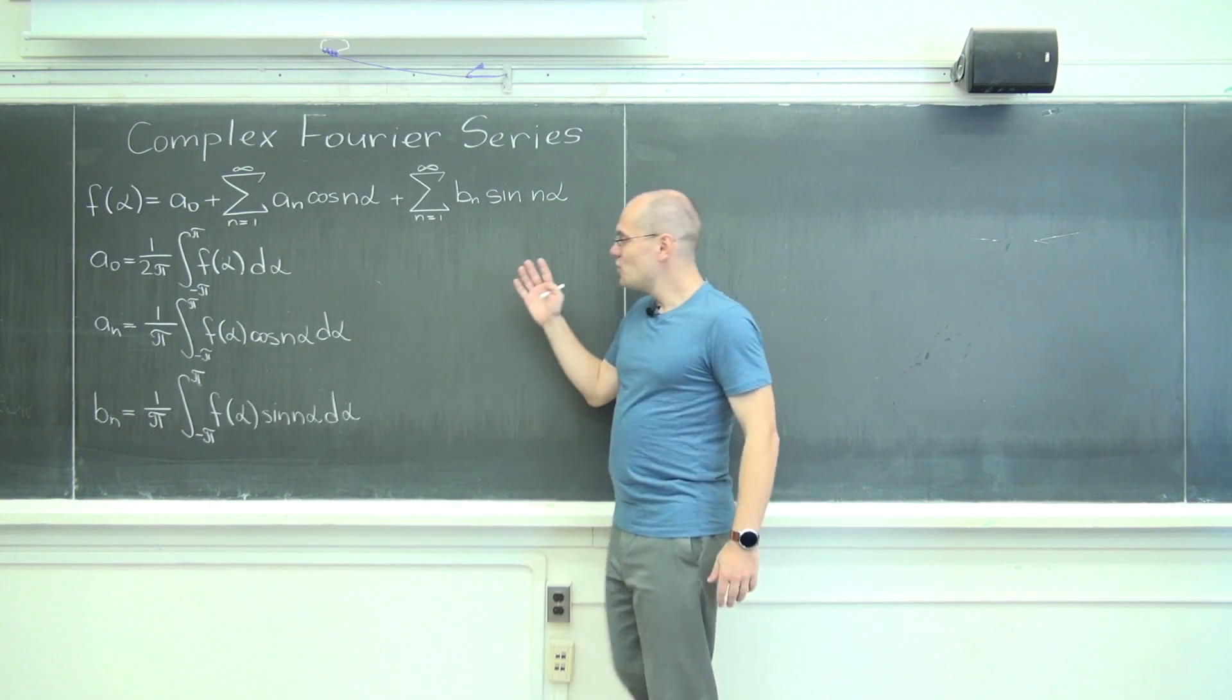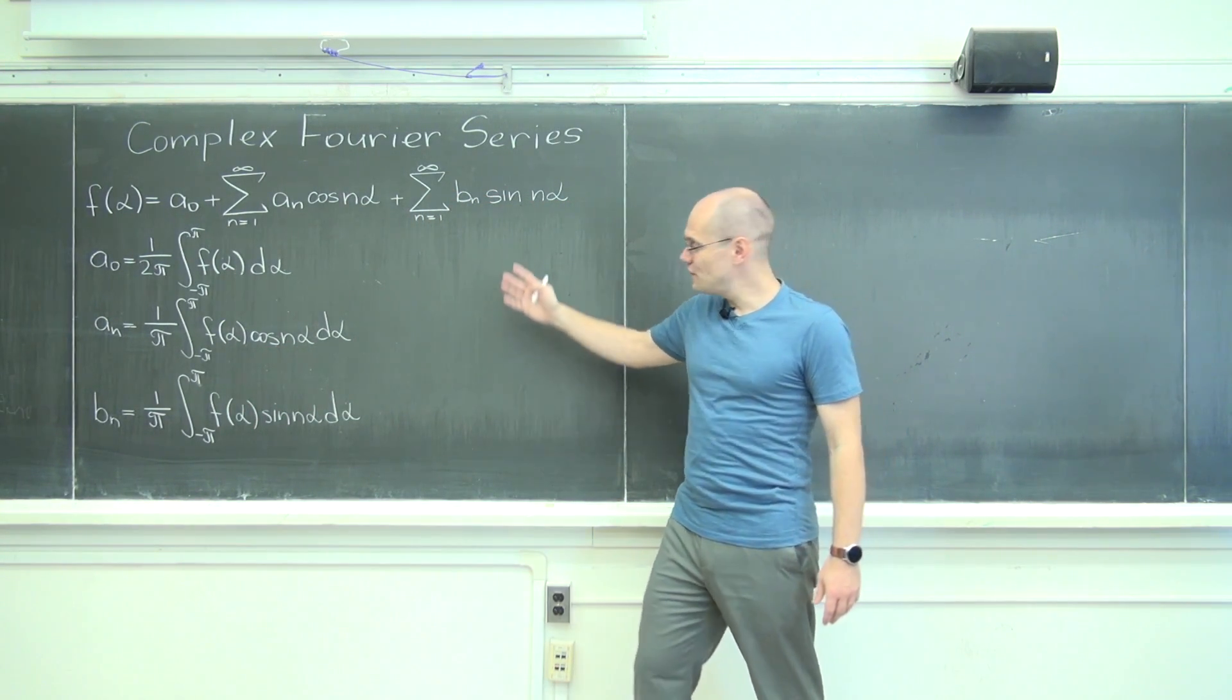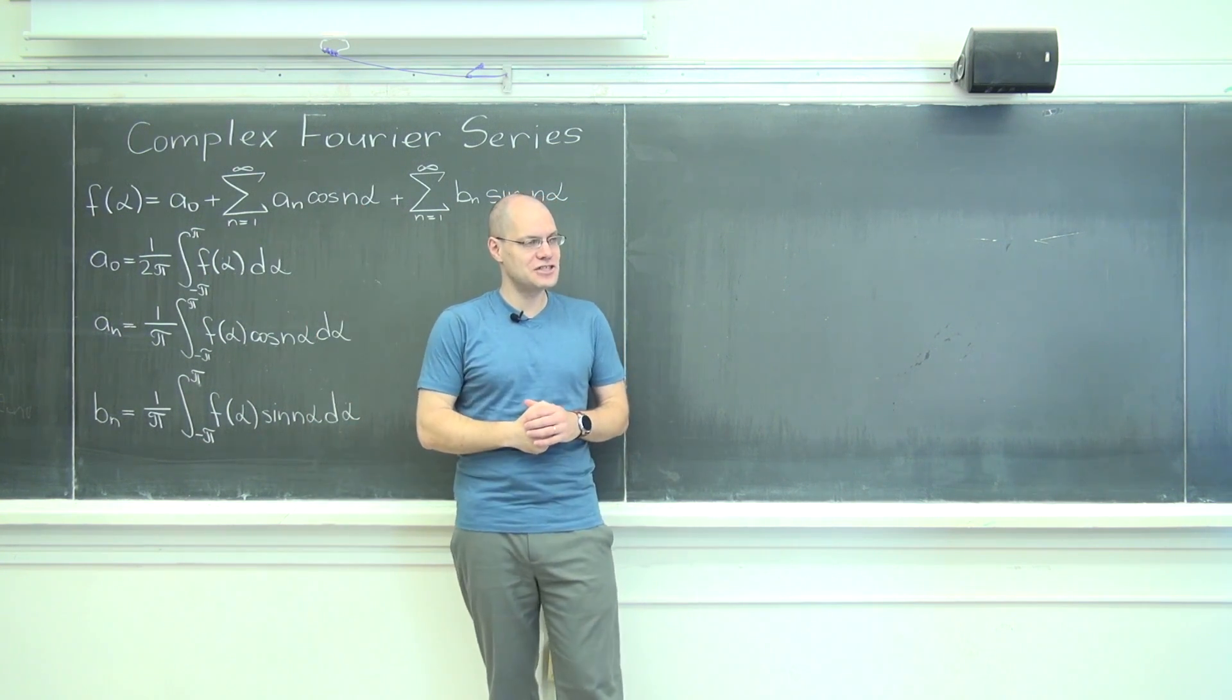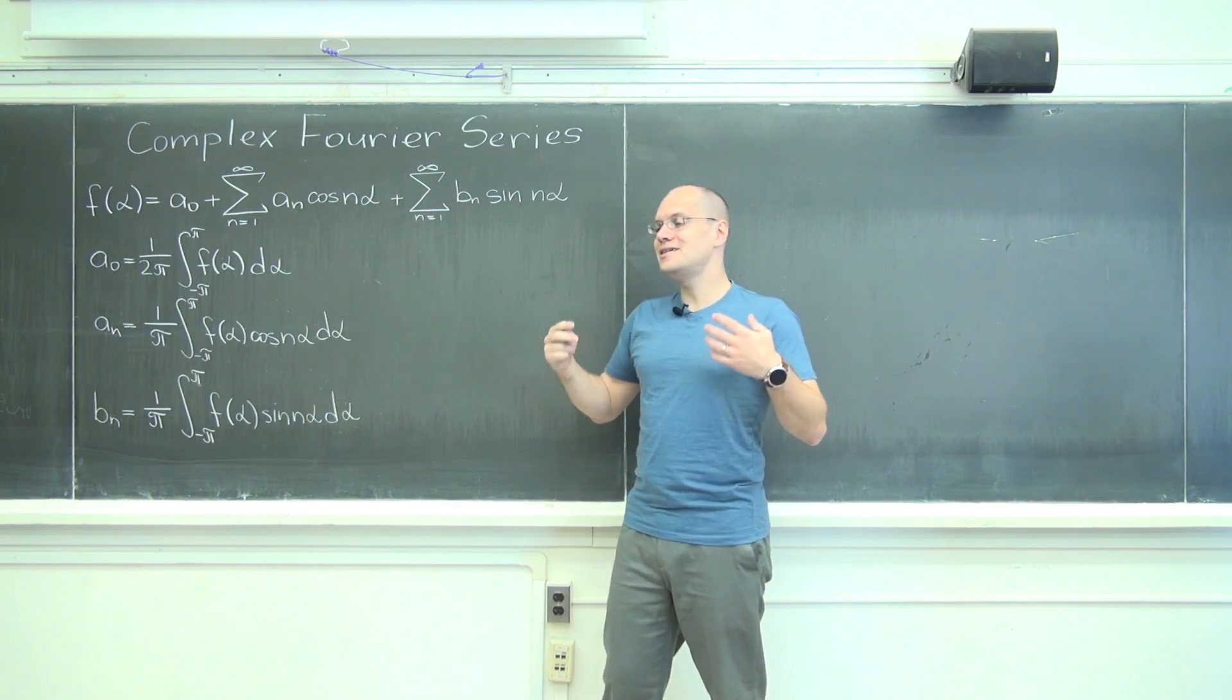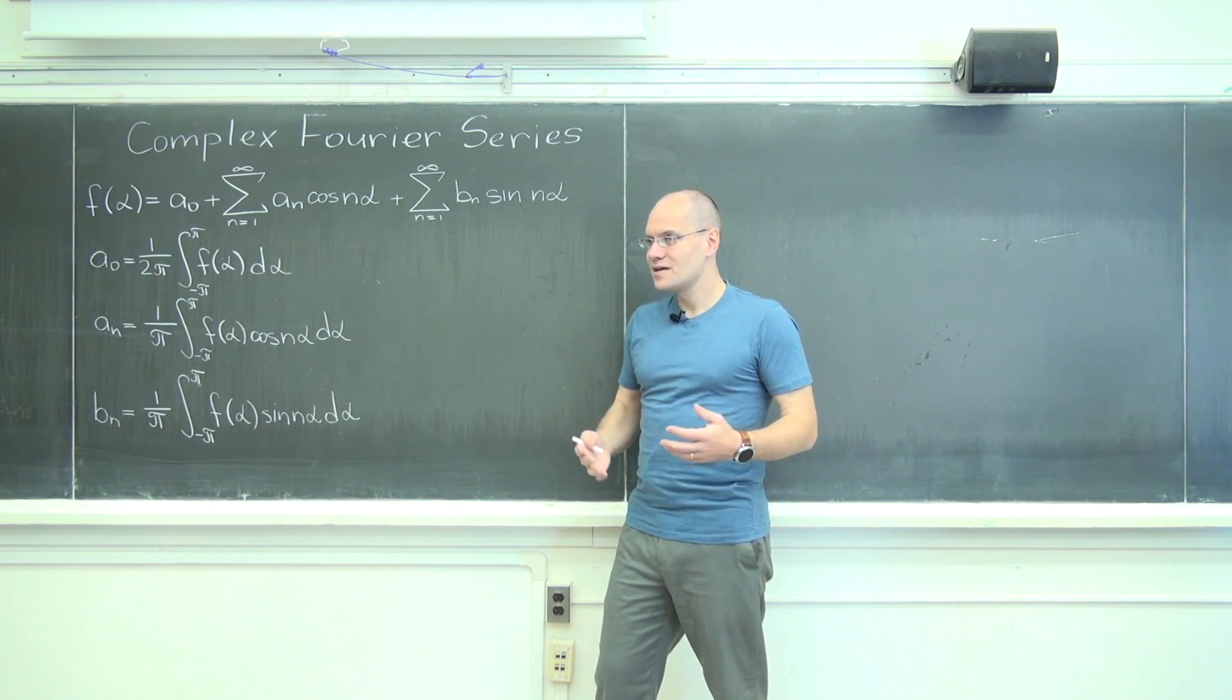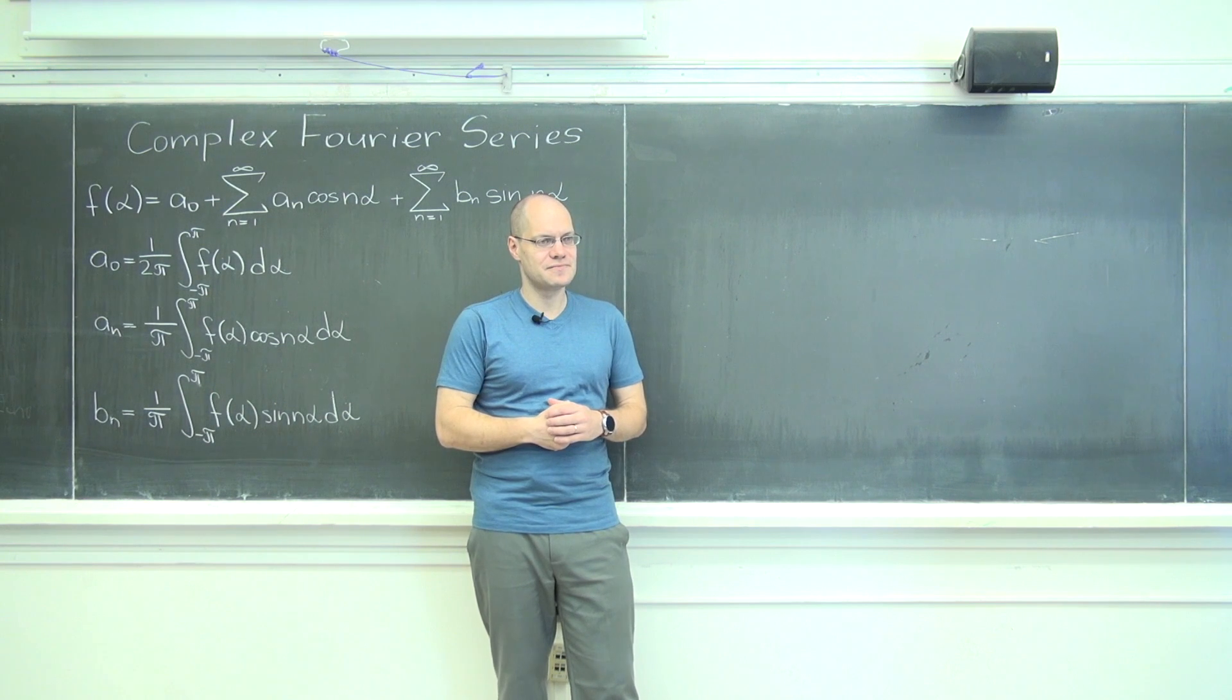There are three different formulas for determining the coefficients, and not only that, the coefficient in front here is 1 over 2π where everywhere else it's 1 over π. So there's just something unsatisfying about the Fourier series in this form. But if we switch to complex exponentials, all of these problems will go away.